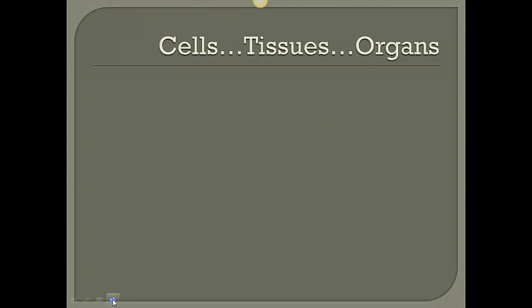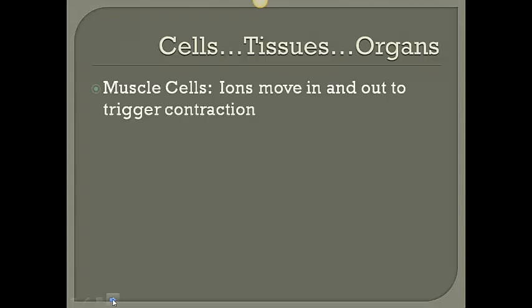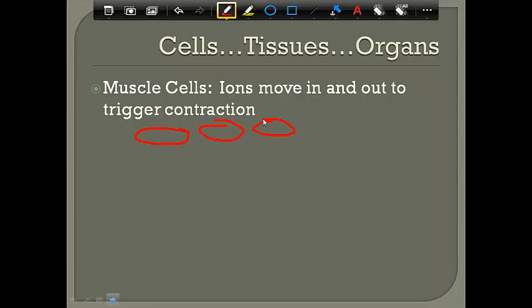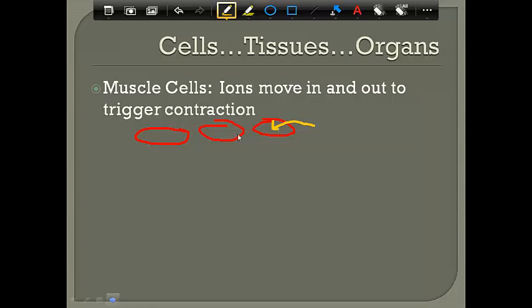In your homeostasis project that you'll be starting soon, you're going to look at how cells help maintain homeostasis, which then helps tissues maintain homeostasis, which then helps whole organs maintain homeostasis — three different levels of how parts of your body work to keep this constant environmental condition. Let's talk about the cells first, using shivering as our example. When your brain tells you you're too cold and you start shivering, those muscle cells start getting ions — often sodium ions and potassium ions — moving in and out of them, which triggers a contraction.